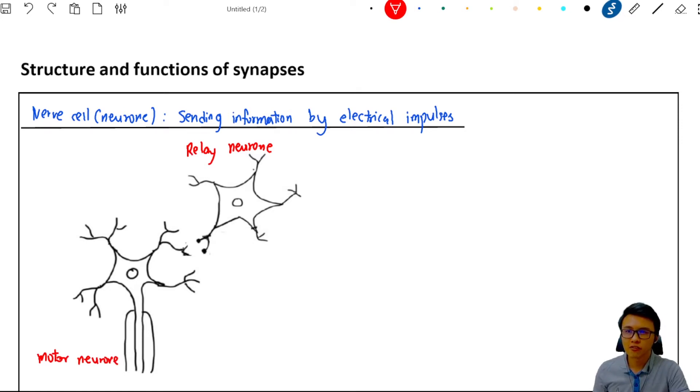Now in this case, the relay neuron wants to send the signal to the motor neuron. What does it need to do? First, it needs to transmit the electrical impulse from its dendrite all the way to the synaptic knob of this relay neuron. Now remember that the nerve cell always transmits the nerve impulse from the dendrite to the synaptic knob. So this is the direction, always remember that.